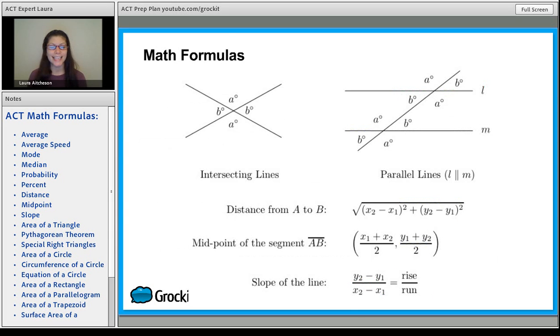For intersecting lines and parallel lines, you want to know a few things. If you have one value, so let's say this is 130 degrees, you can find everything else. And they're labeled really well. So all the A's are 130 degrees, and then all the B's would have to be 50 degrees because they're supplementary angles, which means they add up to, not 50, still me, they add up to 180 degrees.